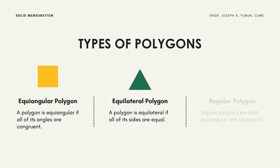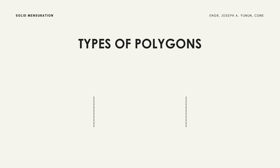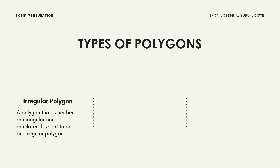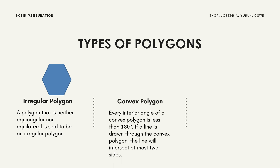A regular polygon is both equiangular and equilateral. An irregular polygon is one that is neither equiangular nor equilateral. You should be familiar with these types of polygons.